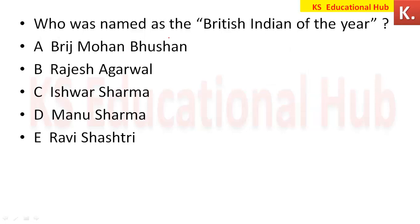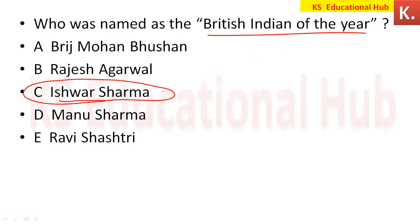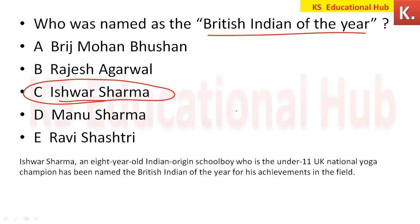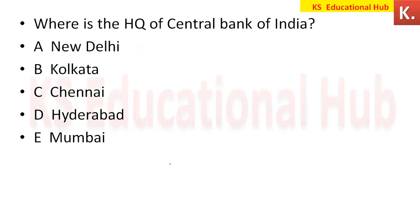Who was named British Indian of the Year? Eight-year-old Ishwar Sharma received this award under the 11th UK National Yoga Championship, receiving the British Indian of the Year Achievement Award.